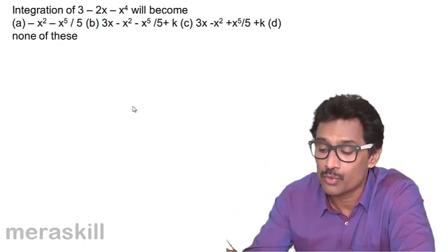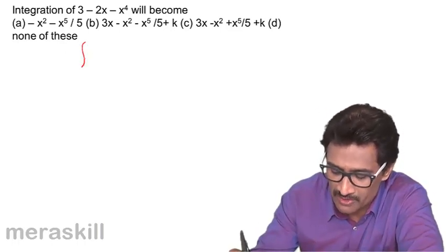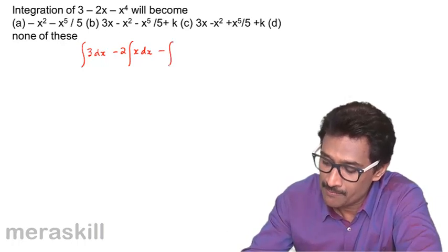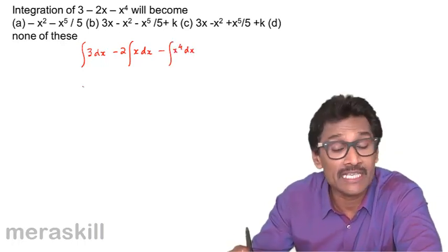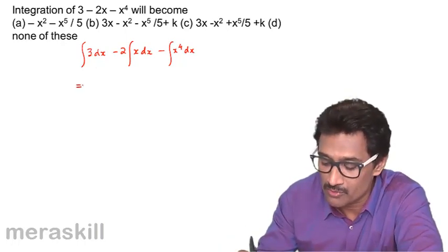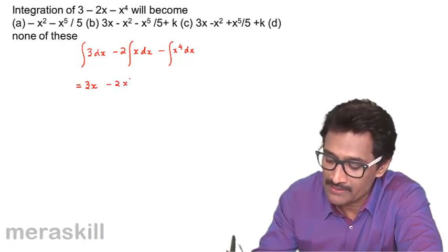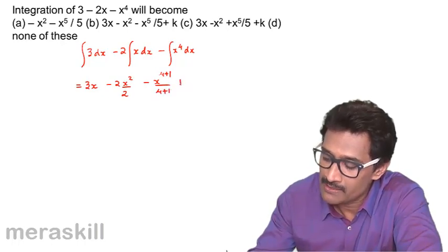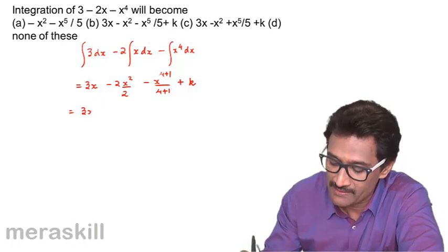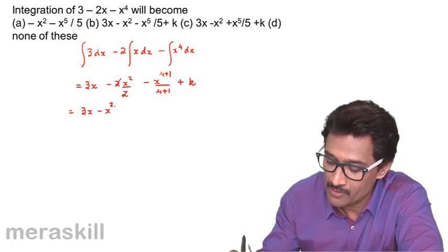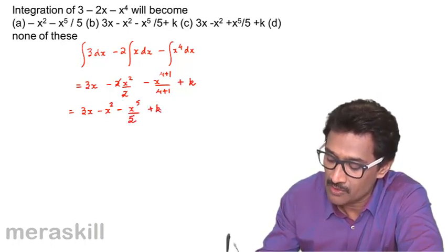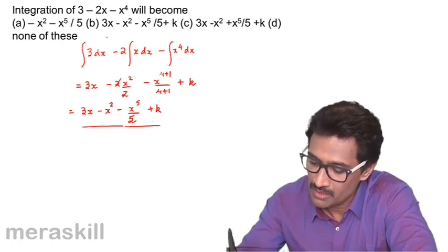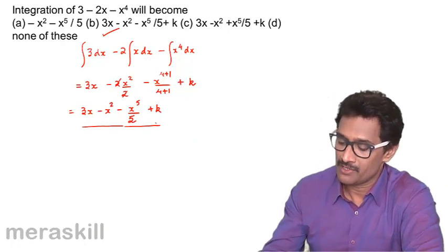The next problem is the integral of (3 - 2x - x⁴) dx. We split it: integral of 3 dx minus 2 times integral of x dx minus integral of x⁴ dx. This gives 3x minus 2 · x²/2 minus x⁵/5, plus a constant k. Simplifying: 3x minus x² minus x⁵/5 plus k, which matches option B.